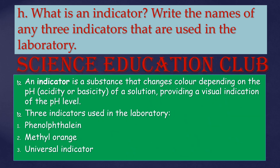What is an indicator? Write the names of any three indicators used in the laboratory. An indicator is a substance that changes color depending on the pH of a solution, providing a visual indication of the pH level. Three indicators used in the laboratory: phenolphthalein, methyl orange, and universal indicator.